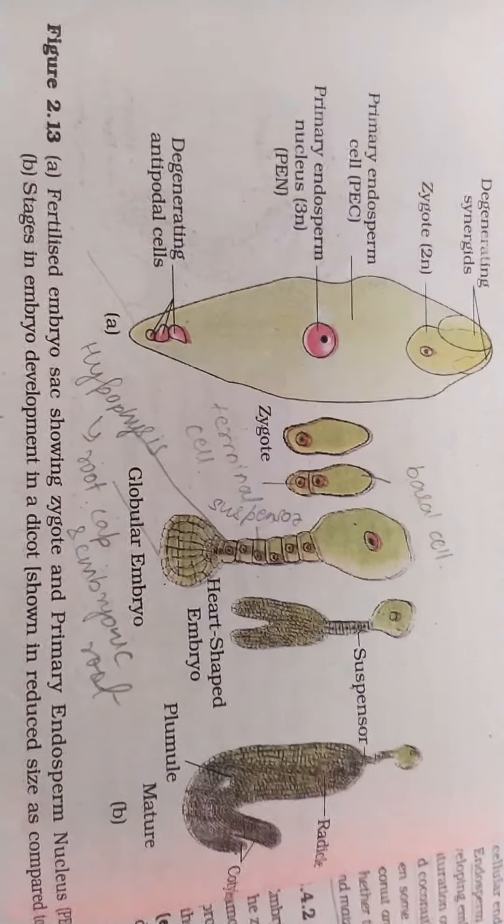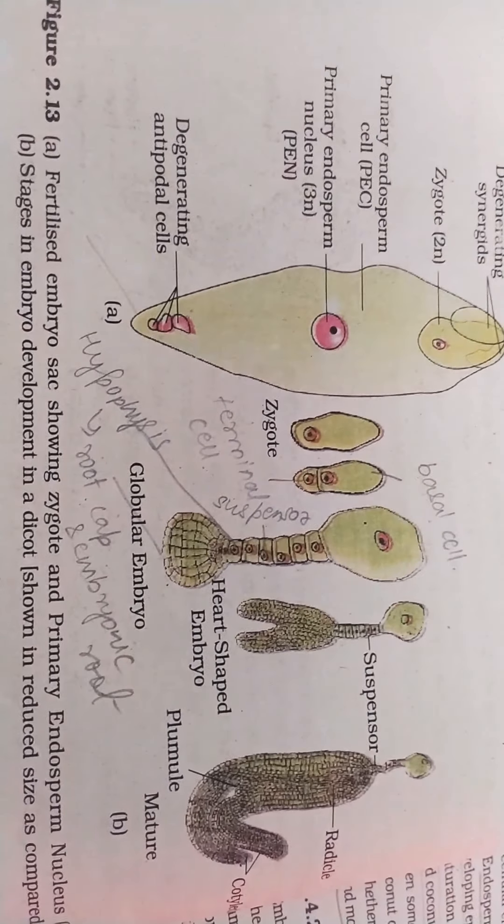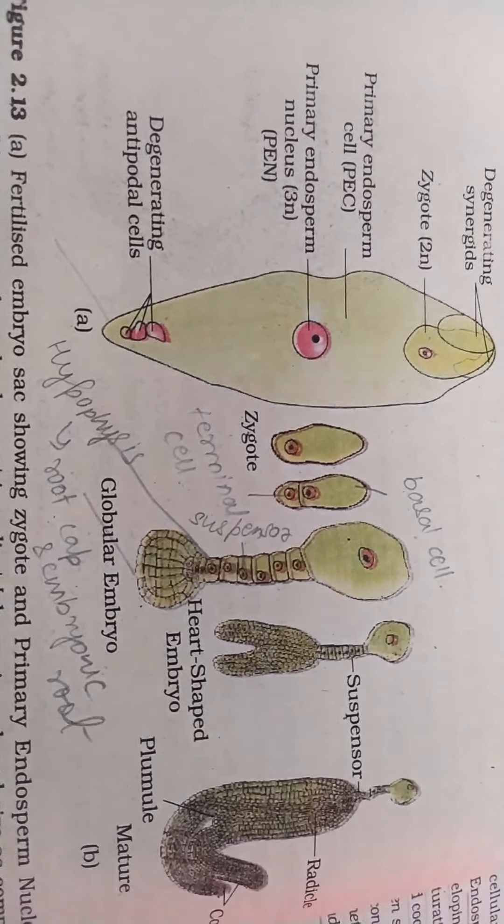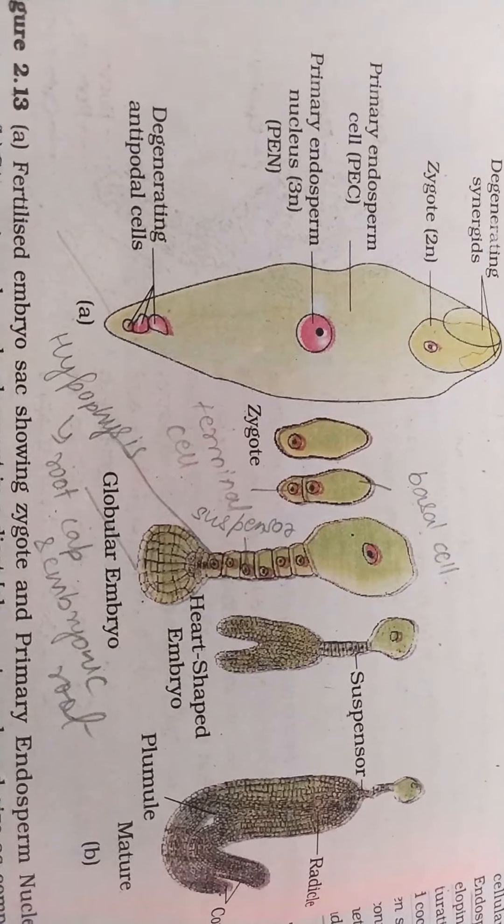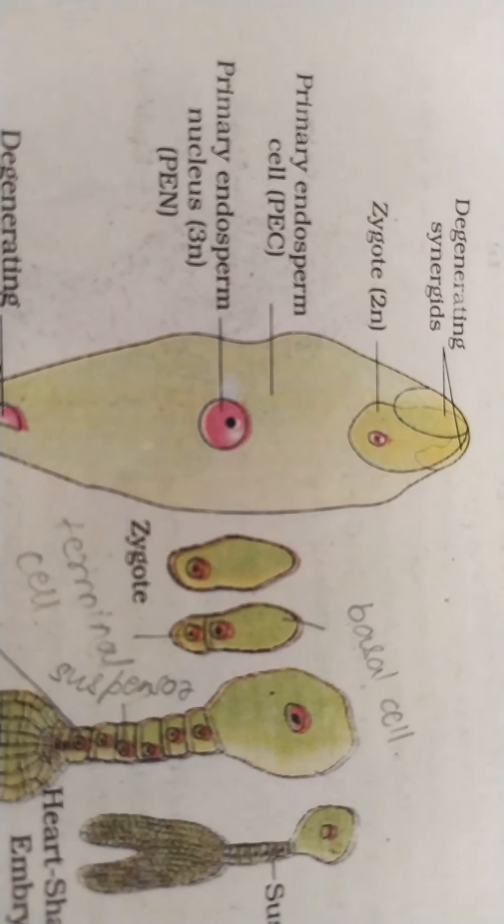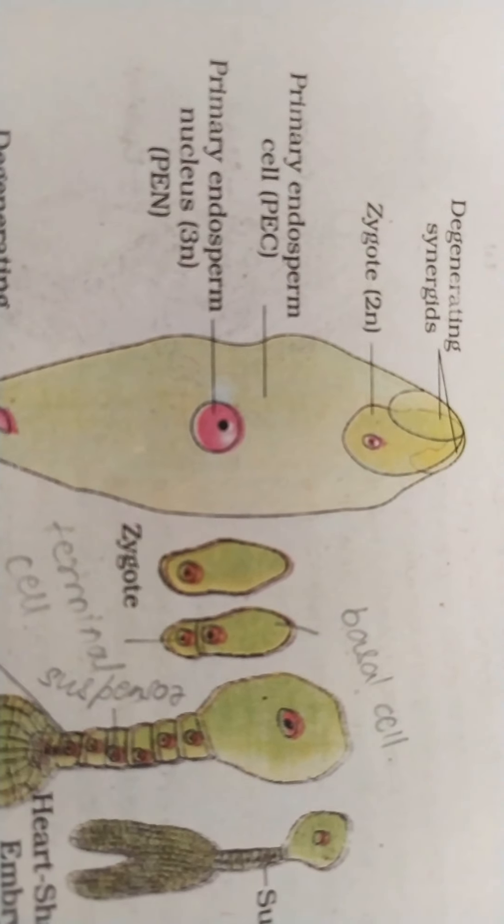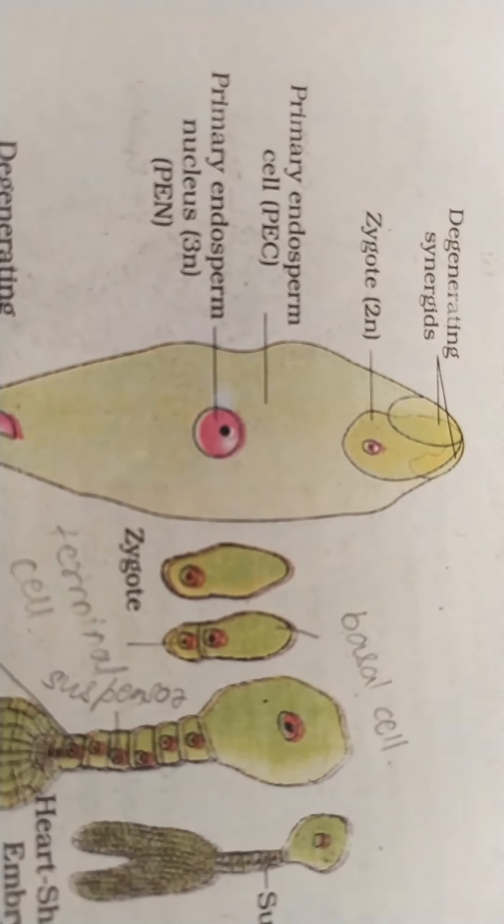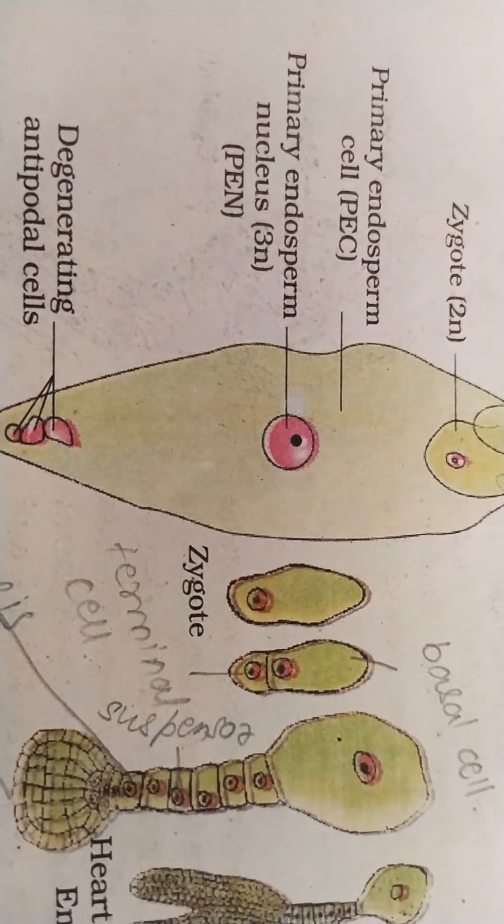So if you see here, the first figure shows fertilized embryo sac where at the micropylar end you have the zygote. The synergids now have started degenerating and the central cell has developed into PEC, that is primary endosperm cell.